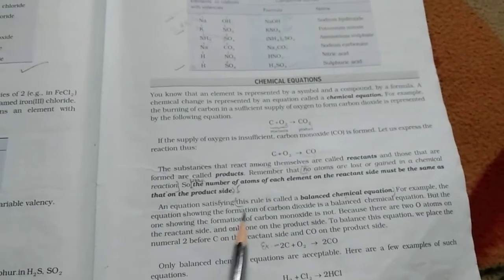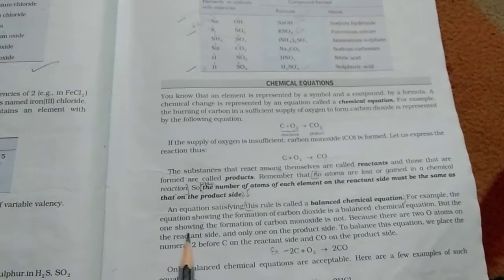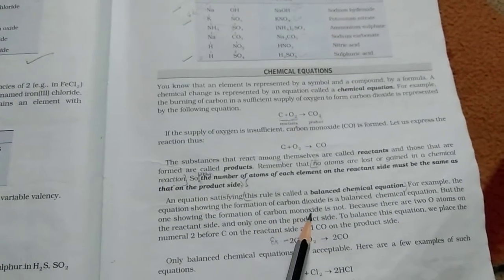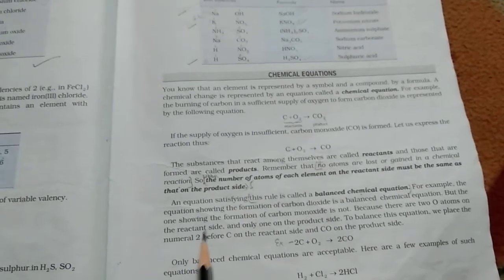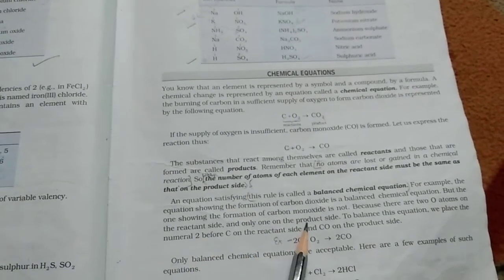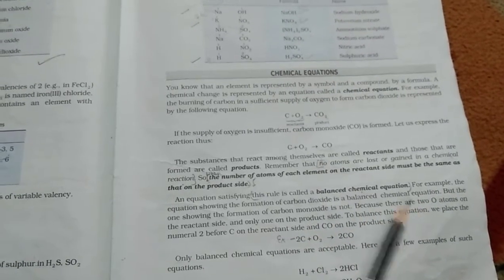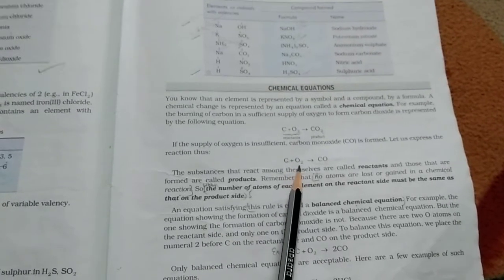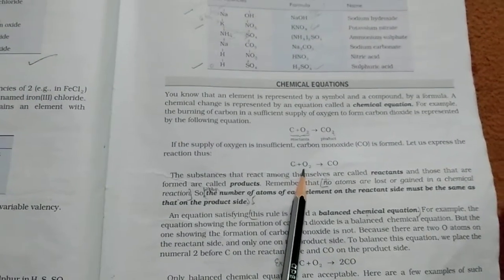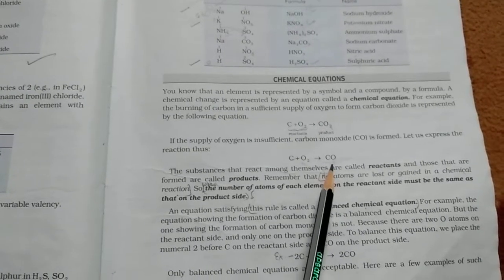An equation satisfying this rule is called a balanced chemical reaction. Like, the equation showing the formation of carbon dioxide is a balanced chemical equation. But, the one showing the formation of carbon monoxide is not. Because, there are two atoms on the reactant side. Here, you will see two atoms of oxygen on the reactant side and on the product side, only one atom of oxygen is present.